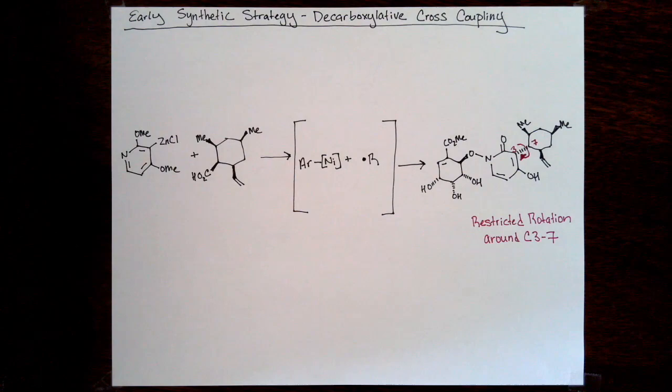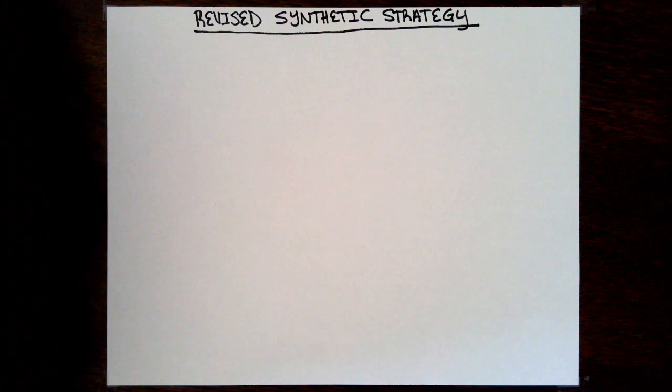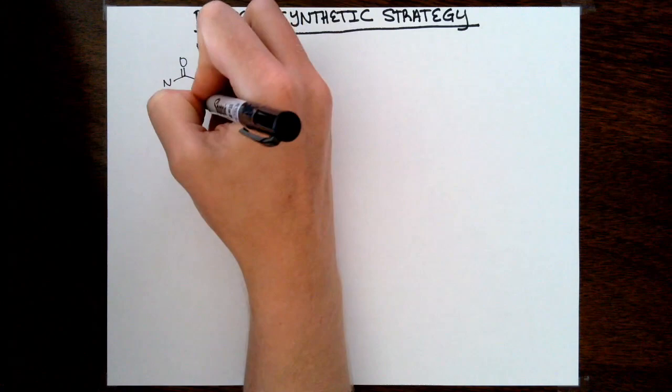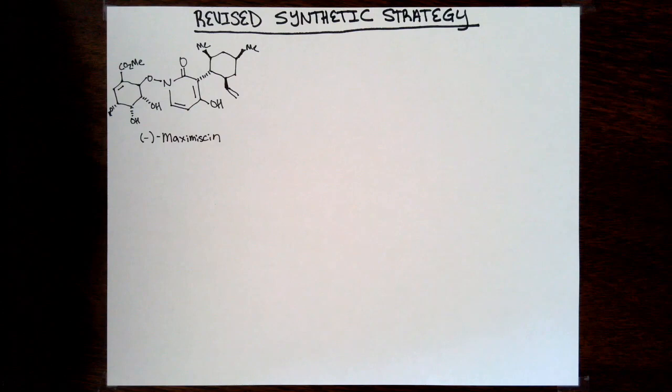Sometimes reliable methods or redefining your strategy can actually lead to simpler solutions. That cross-coupling reaction is certainly extremely impressive, but they take a different approach. Their initial approach was to synthesize the core C3-C7 bond through a decarboxylative cross-coupling approach. When that did not work out, they decided to reevaluate the synthesis and go after a different core disconnection.